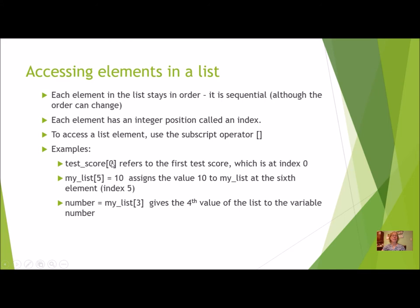The index number refers to a value, and it gets a little tricky when you first get used to it. For example, index 5 gives you the sixth element in the list. You can also access a value and assign it to a variable — for instance, my_list[3] gets the fourth value and assigns it to a variable called number. Both examples access an element using the index, but the index itself is just the position, not the actual value.